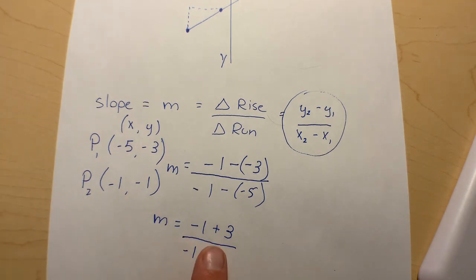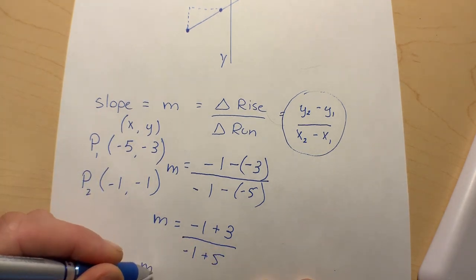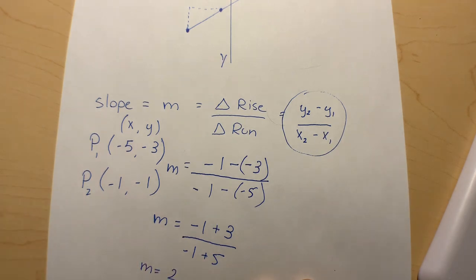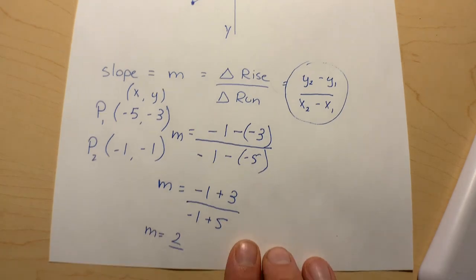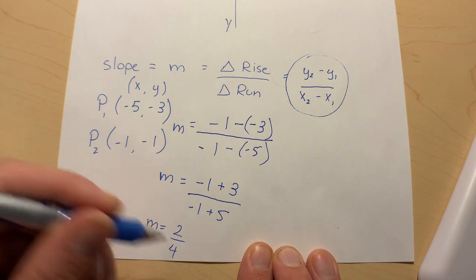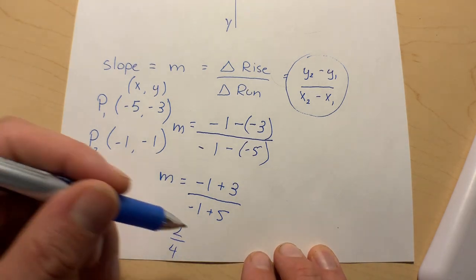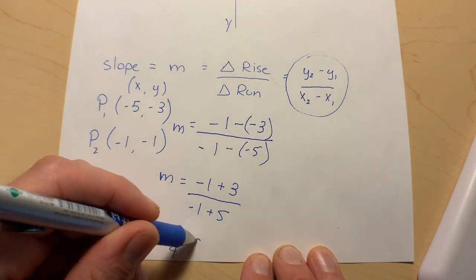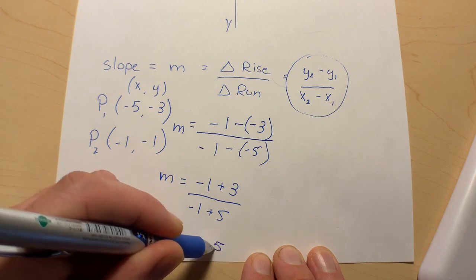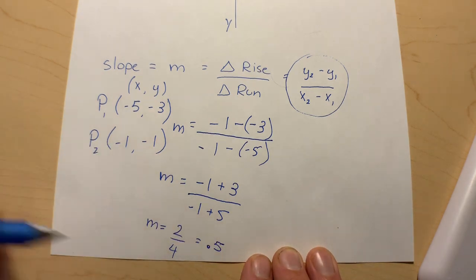-1 + 3 will give us 2, and -1 + 5 will give us 4. 2 divided by 4 is a half, or 0.5, or one-half. So slope is one-half or 0.5, or however you want to think about it.